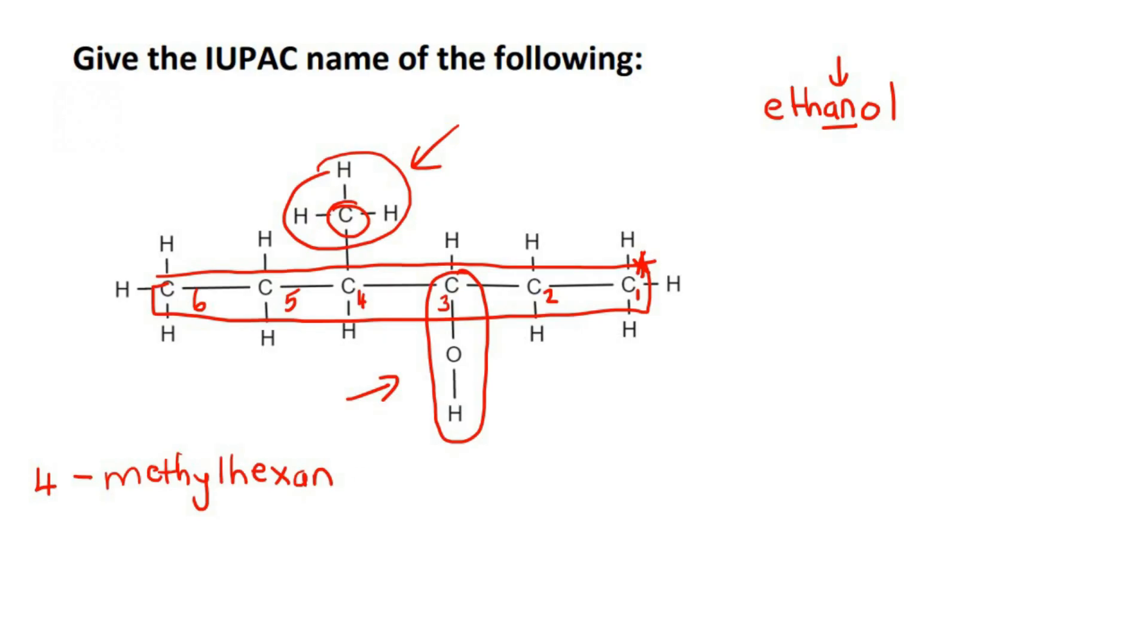And then it's on carbon number three and it's an alcohol. So that's OL. So you wouldn't say 4-methyl-hex-3-O. You must put the AN. Just like you do in ethanol. So the final answer would be 4-methylhexan-3-ol.